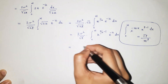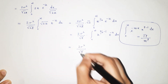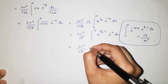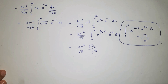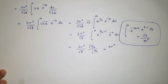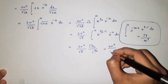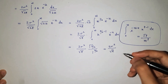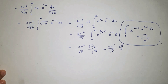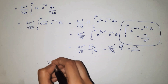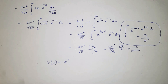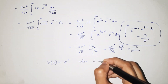This equals 2 sigma squared divided by root pi times gamma(3/2). Since gamma(3/2) equals root pi over 2, substituting and cancelling pi, we get sigma squared. Therefore, the variance of x equals sigma squared when x follows the normal distribution.